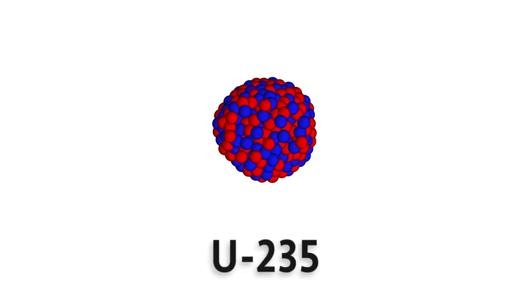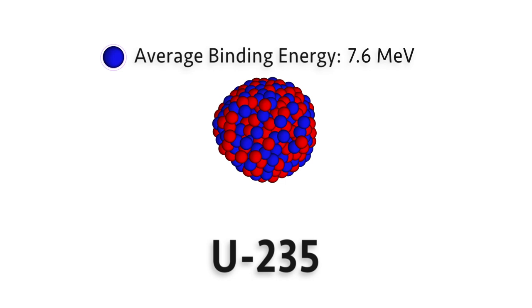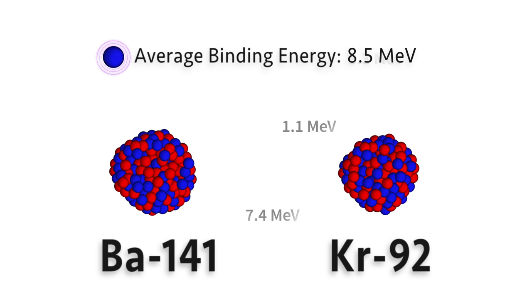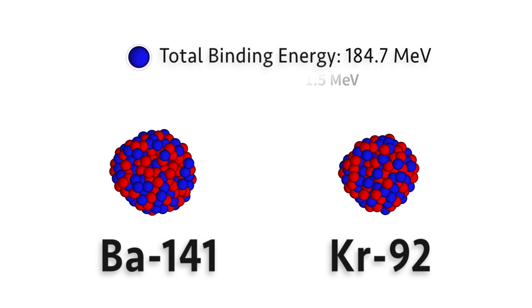When a nucleus of uranium-235, which has an average binding energy of 7.6 MeV per nucleon, splits into two smaller products with average energies of about 8.5 MeV per nucleon, that causes a release of 0.9 MeV per nucleon, or a total of 192 MeV per fission event.